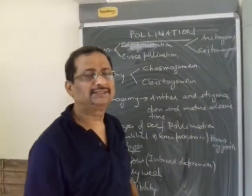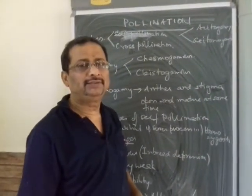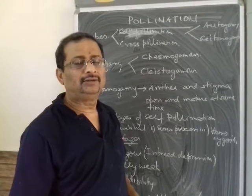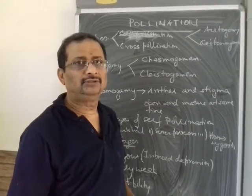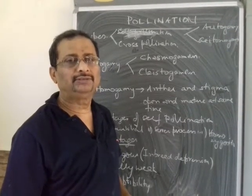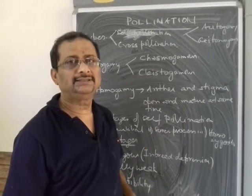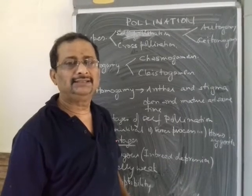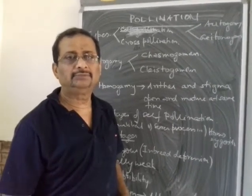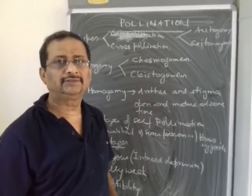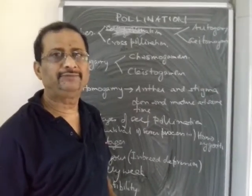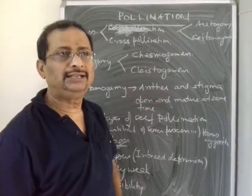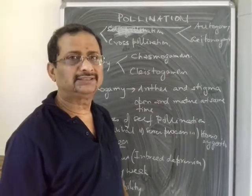Students of standard 12, today we are going to study about pollination. Pollination is a method adapted in sexual reproduction in plants where the pollen grains are transferred from the anther of a flower to the stigma of the same flower or a different flower of the same species.